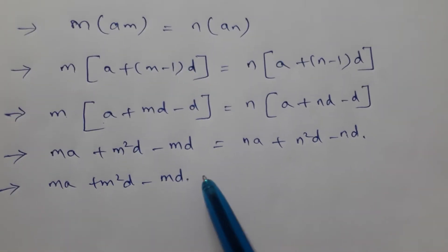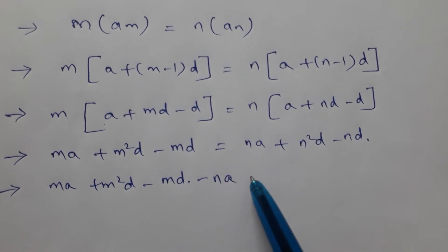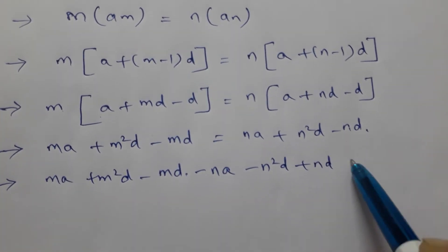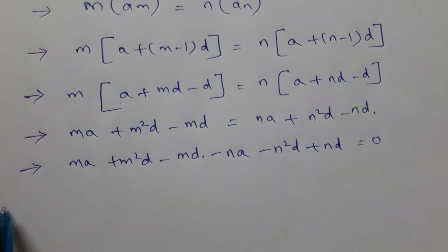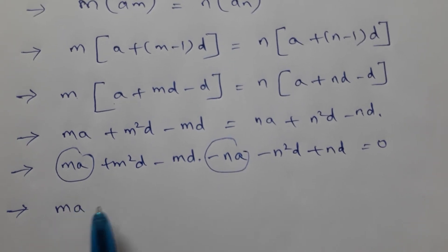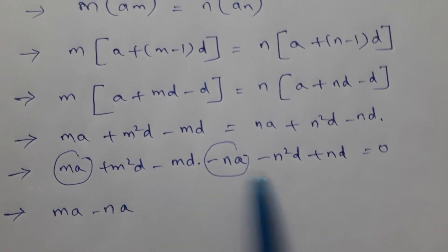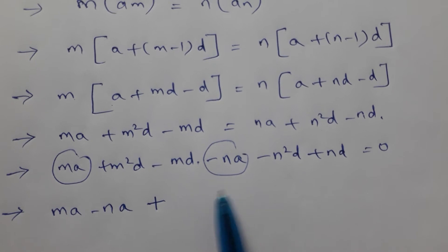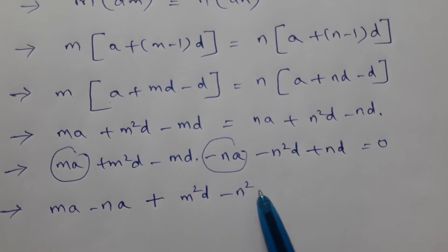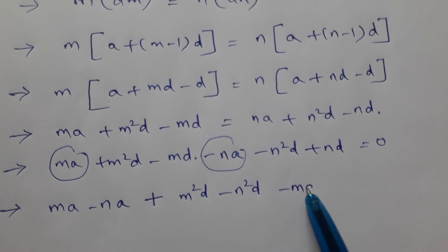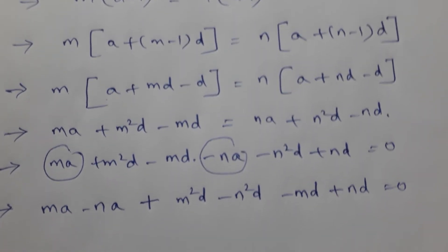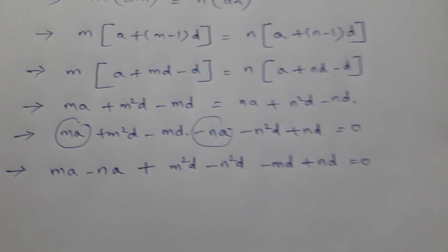Bring all terms to one side: ma plus m²d minus md minus na minus n²d plus nd equals 0. Now write the 'a' terms first — ma minus na — then write all the 'd' terms in descending order: m²d minus n²d minus md plus nd equals 0.